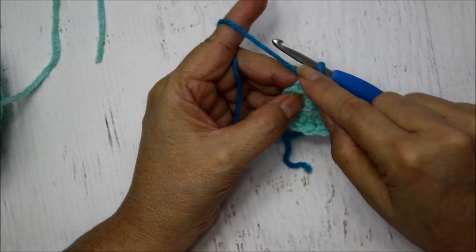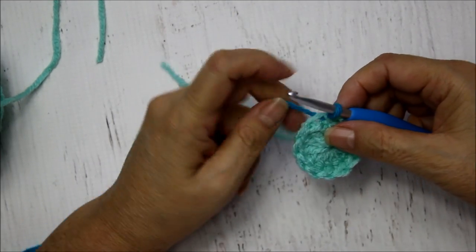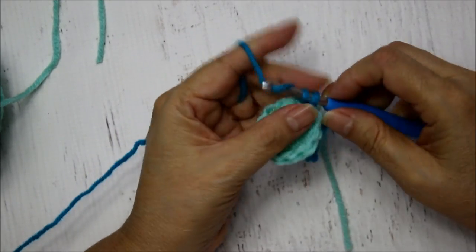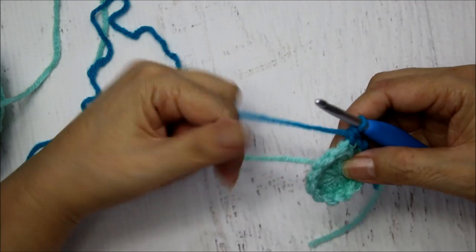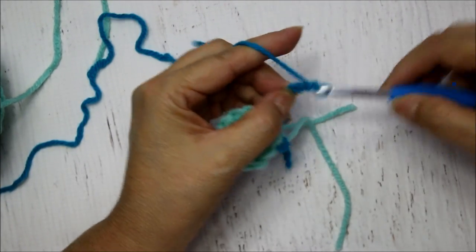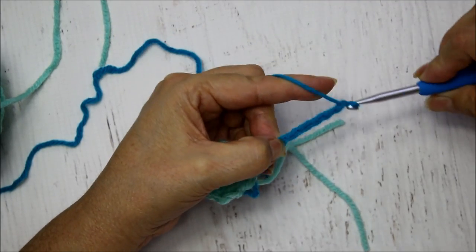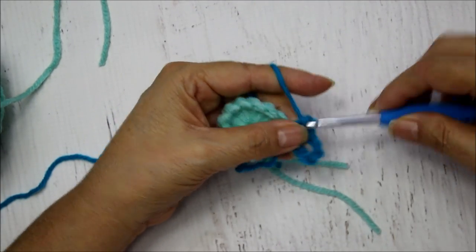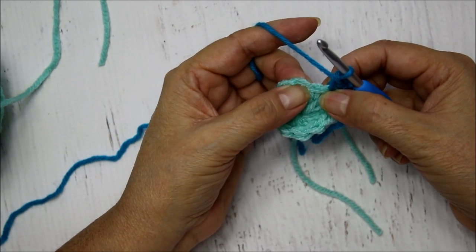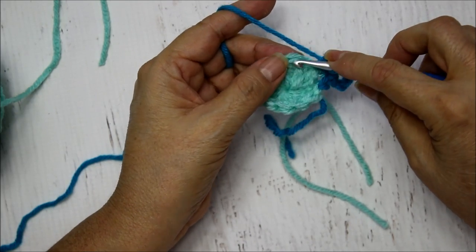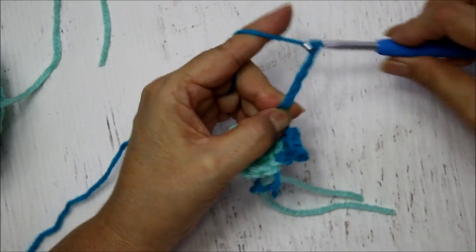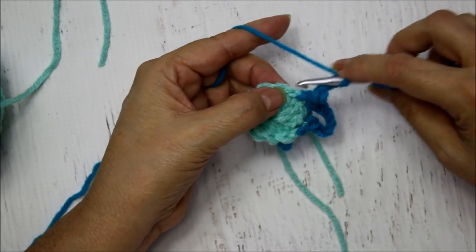So here now we're going to make these little loops that are going to help us be able to put in the petals. So here we're going to chain 1 and then we're going to single crochet into the next stitch. And now we're going to chain 7: 1, 2, 3, 4, 5, 6, 7. We're going to single crochet into the same stitch. And then we're going to skip the next stitch here, the next double crochet. We're going to single crochet, 1 single crochet in there. Chain 7: 2, 3, 4, 5, 6, and 7. And we're going to single crochet back into the same stitch.